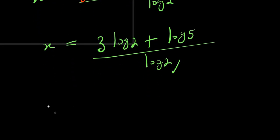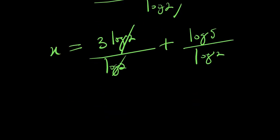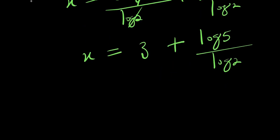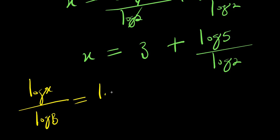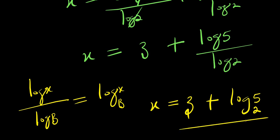Let's divide by the common denominator. x equals 3 times log 2 divided by log 2, plus log 5 divided by log 2. Now if you have log x divided by log B, this equals log x to the base of B. So from here x equals 3 plus log 5 to the base of 2. Alright, this is our answer: 3 plus log 5 to the base of 2.